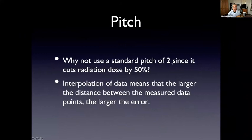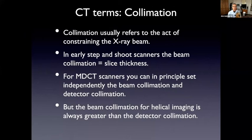So why not use the standard pitch of say two, because we automatically cut radiation dose in half. The problem is that if the distance between the houses are large and the houses are a little different, you're really just estimating what the value of a house is. In the same way, if there's a lot of space in between the data points that you acquire, there's going to be more errors that introduced in the measured data. And you can never really reconstruct at a thin section if you have a high pitch.